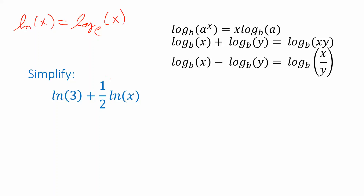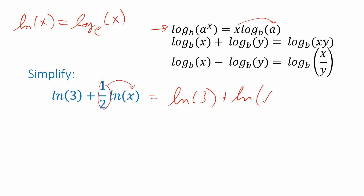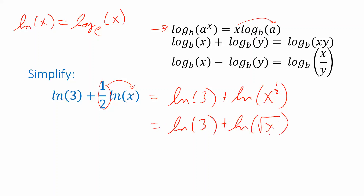I have a coefficient of one-half, which I can put inside using the first property. So this coefficient moves inside to give me natural log of 3 plus natural log of x to the one-half. We can rewrite x to the one-half as the square root of x. Then I have a sum of two logarithms, so the second property tells me to combine them into a single logarithm by multiplying the arguments: 3 times the square root of x.